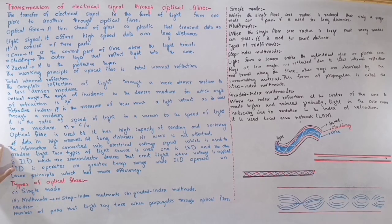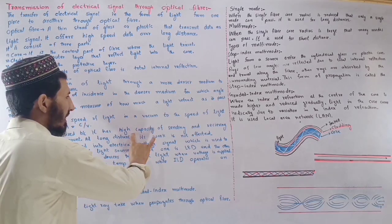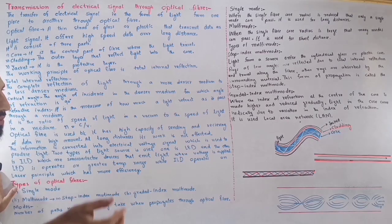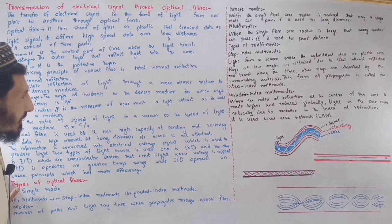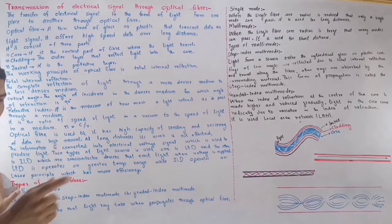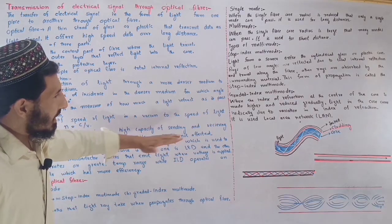Optical fiber is used because it has a high capacity for sending and receiving data in large amounts. A huge amount of data can be sent and received. Long-distance transmission is not affected, and data can be transferred across the world through optical fiber.